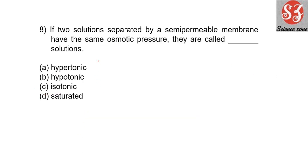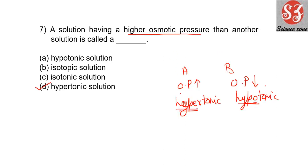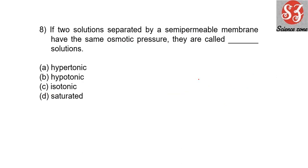Next: 'If two solutions separated by a semi-permeable membrane have the same osmotic pressure, then they are called...' We just saw that when there is a difference, the higher one is hypertonic and the lower one is hypotonic. But if both solutions have the same osmotic pressure, they are called isotonic — 'iso' means same.